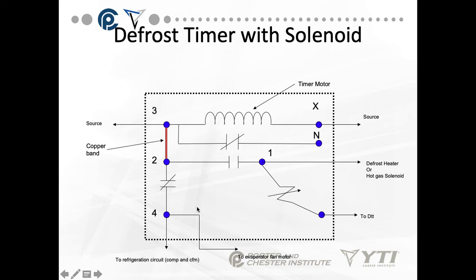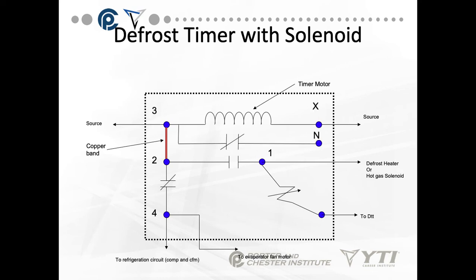This is a different type of defrost timer. You'll notice X is the other source. We have neutral and we have X, but on this case the N terminal is actually a line-powered terminal. So be careful when you look at these clocks — you do have to look at the diagrams, because different manufacturers use different pin designations.